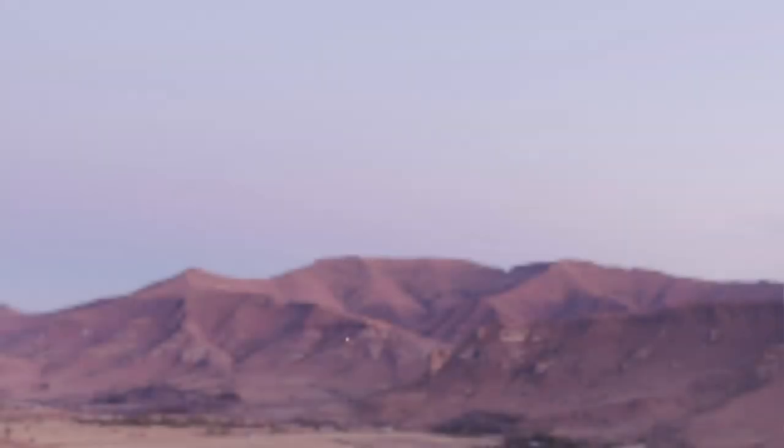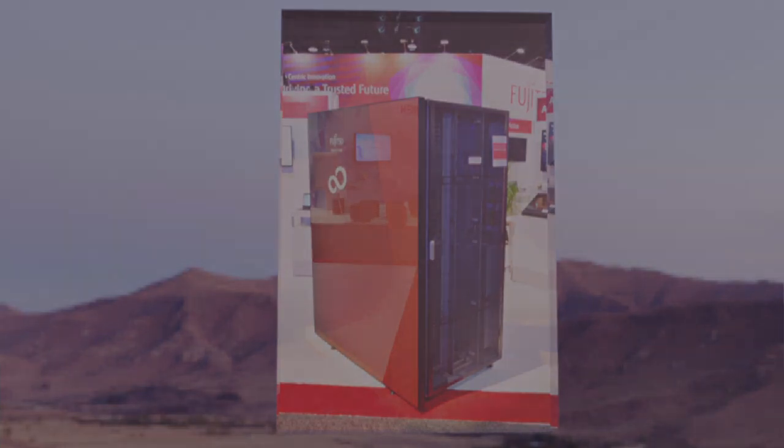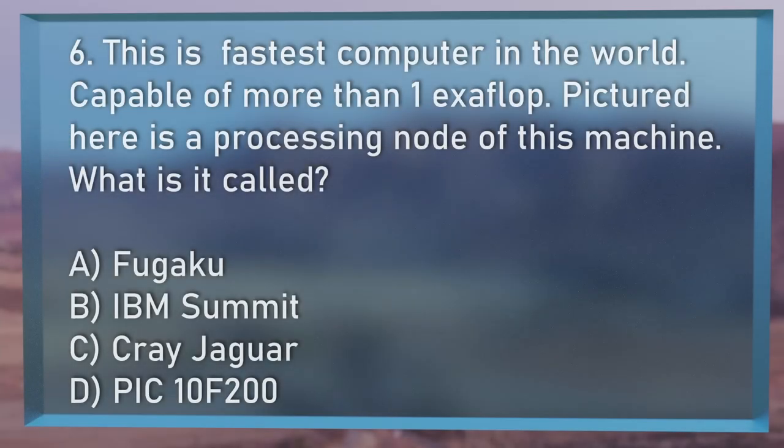Question number 6: We had a look a little while ago at an old supercomputer. This is a processing node of a modern supercomputer. As of 2021, the fastest computer in the world is capable of more than one exa-flop — that's 10^18 floating point operations per second. What is the machine called? A, Fugaku; B, IBM Summit; C, Cray Jaguar; or D, Pick 10F200?